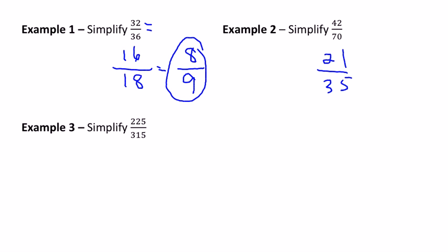Now we look at 21 and 35, and hopefully notice those are both multiples of 7. 21 divided by 7 is 3, and 35 divided by 7 is 5. 3/5 is the correct answer because 3/5 is equivalent to 42 over 70.